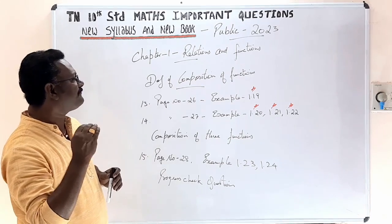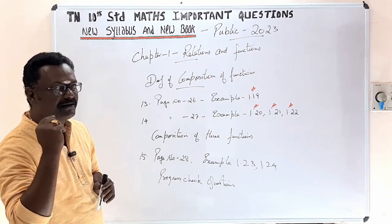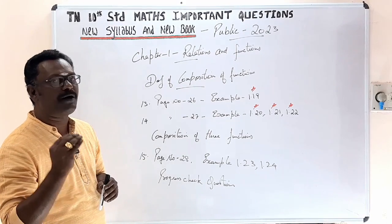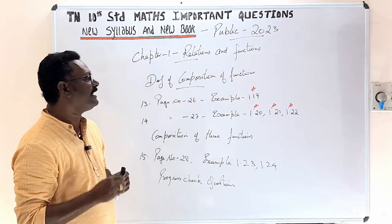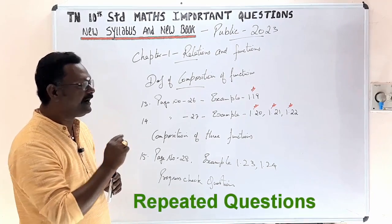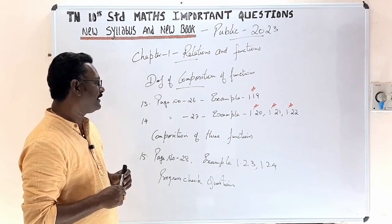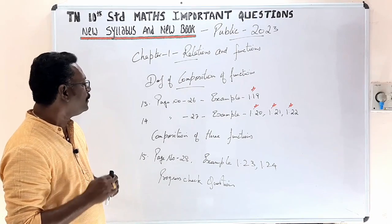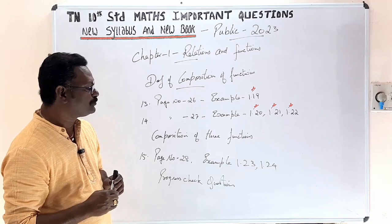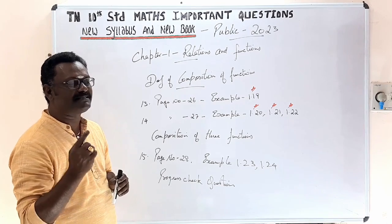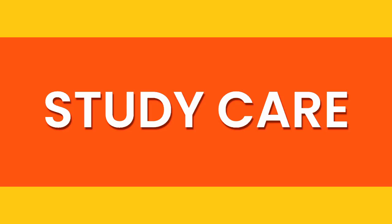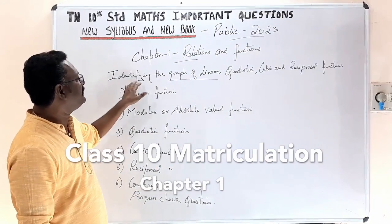Next, the definition of composition of functions. Page number 26, example 1.19 is very important. Page number 27, examples 1.20, 1.21, and 1.22. Next topic: composition of three functions. Page number 28, examples 1.23 and 1.24 — these are exam-likely questions. Also look at the progress check questions for this topic.